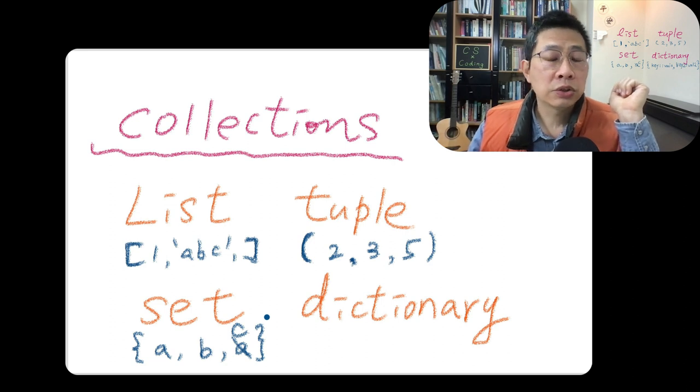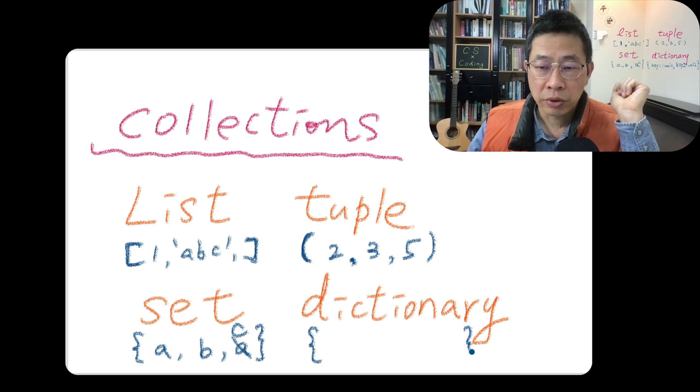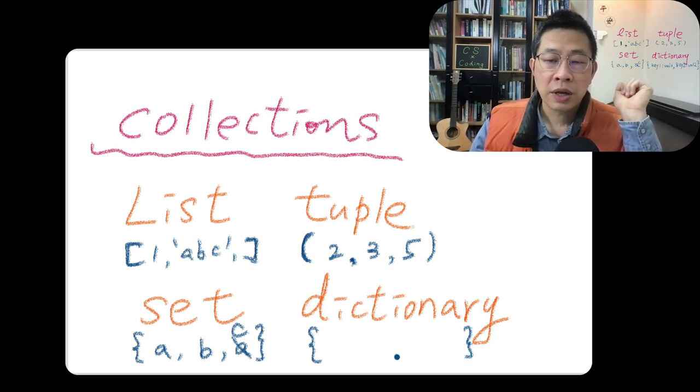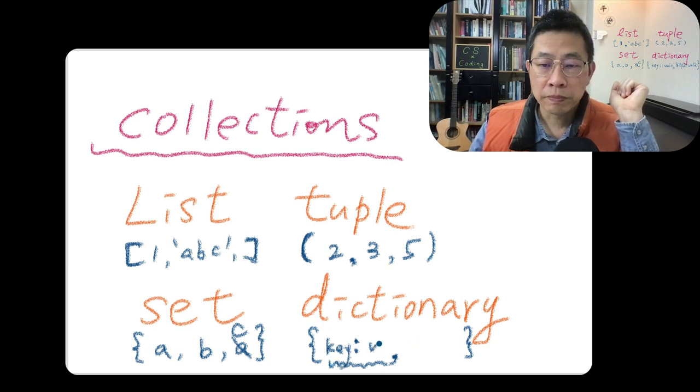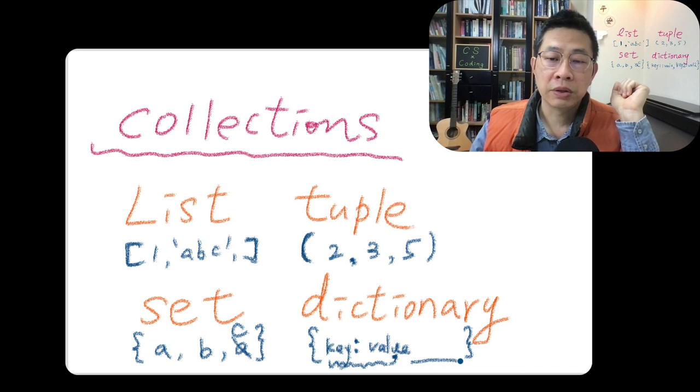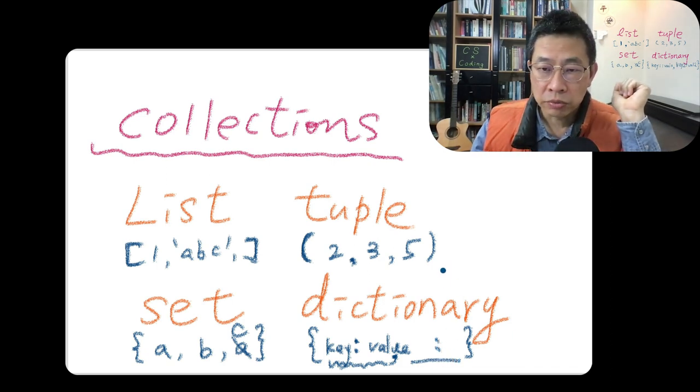And last one, dictionary. Dictionary has the same curly bracket, but each element, they have a pair of two parts. One is we call a key, another is we call a value. That is the first pair. Another pair, you have the same thing.